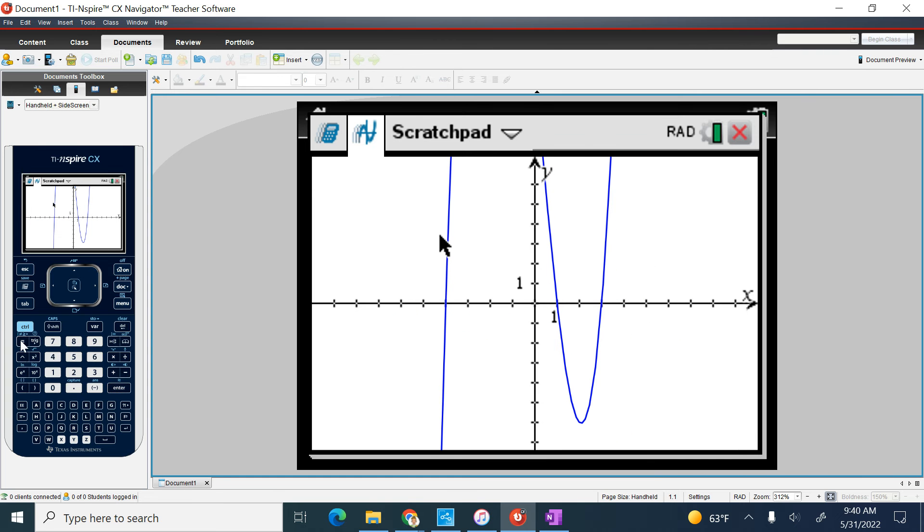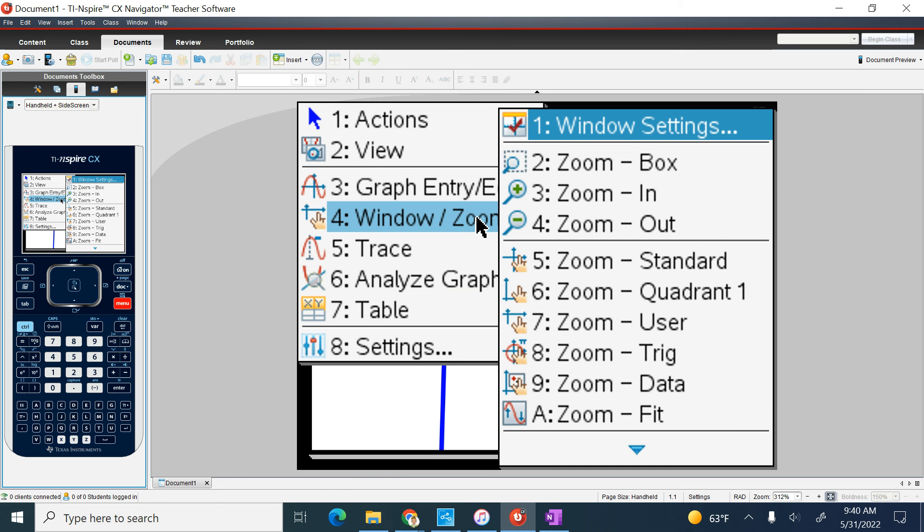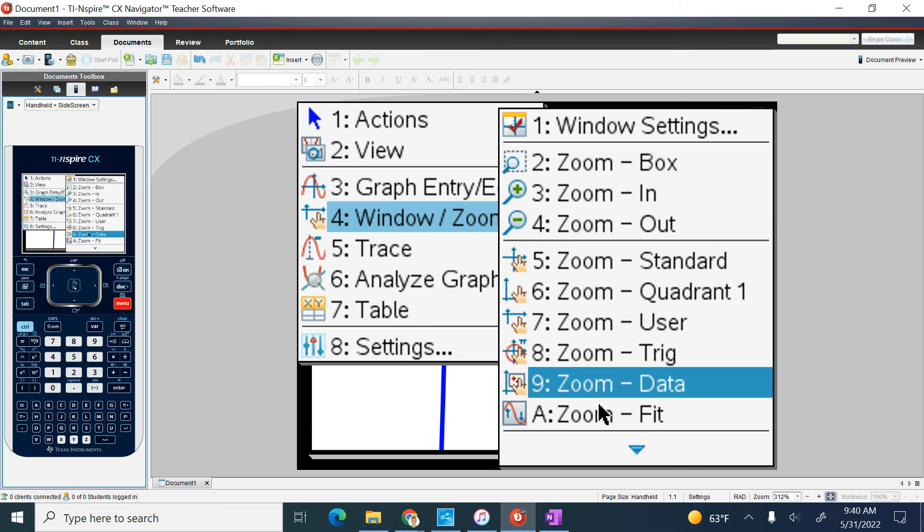It would be nice if I could see my max and my min. I'm going to try to do a zoom fit just to check it out, see if I can find it. So I'm going to go menu, window zoom, zoom fit.